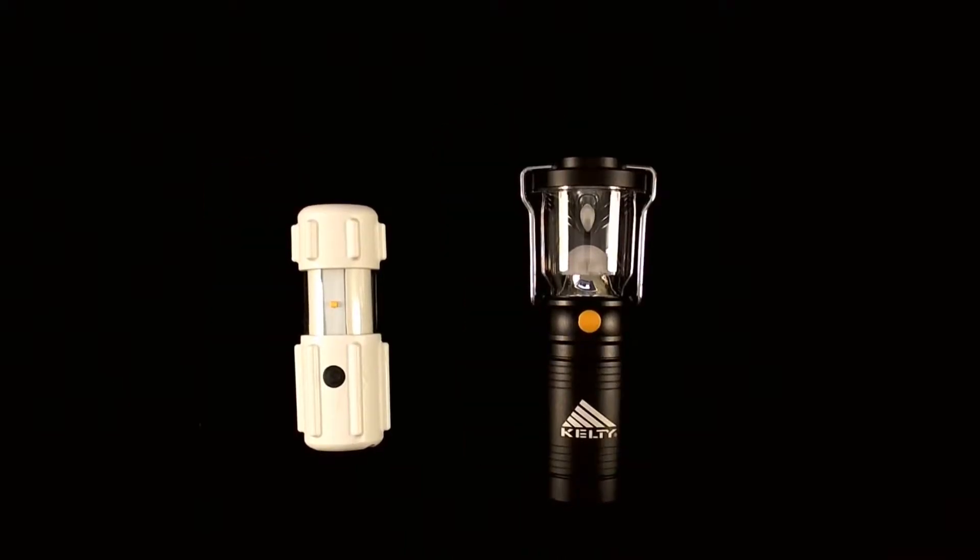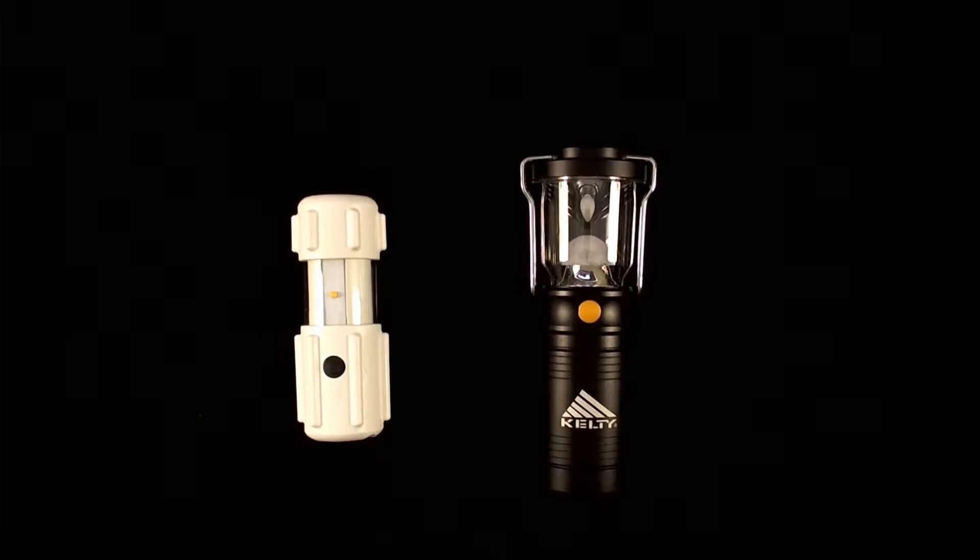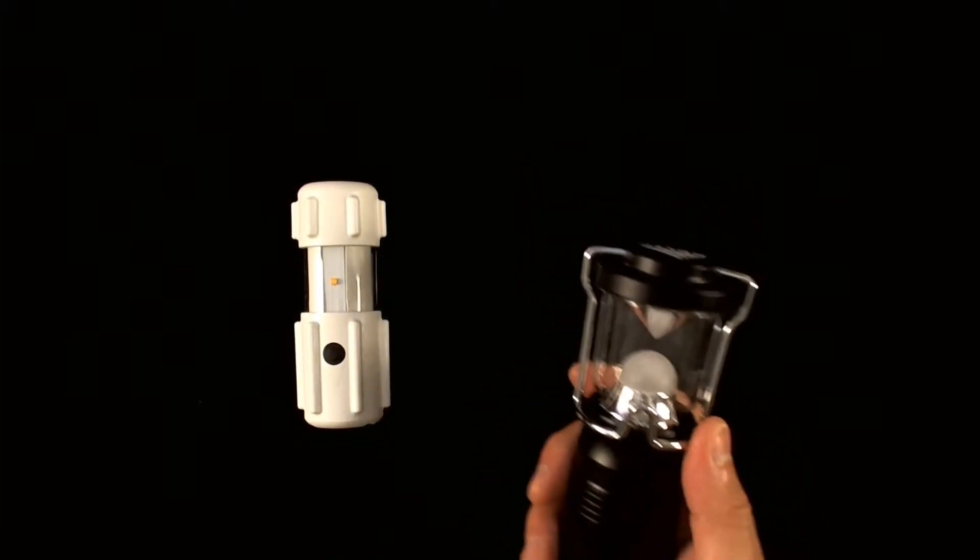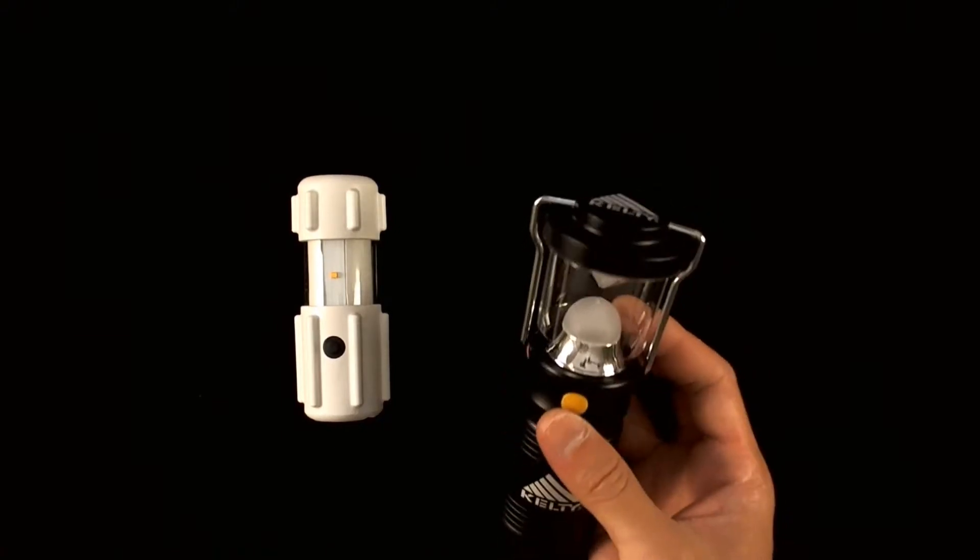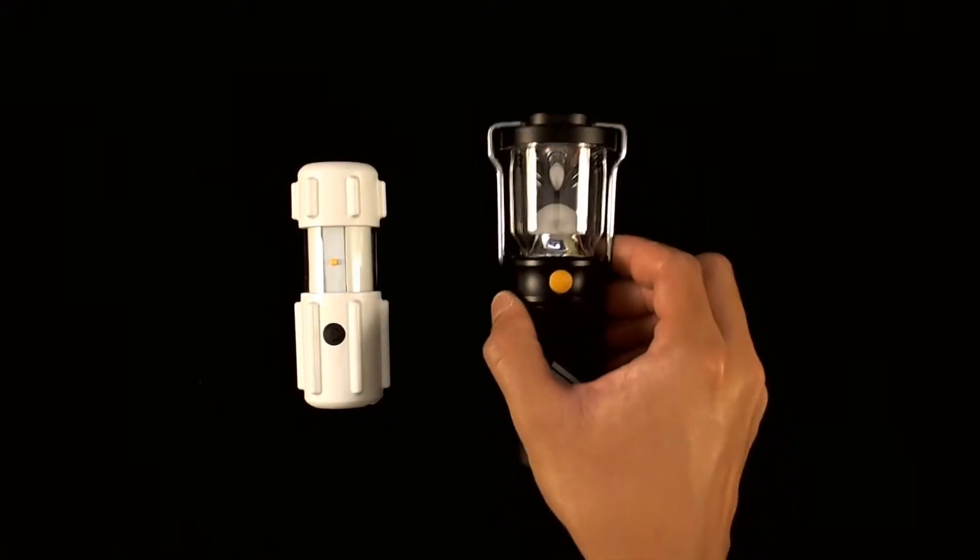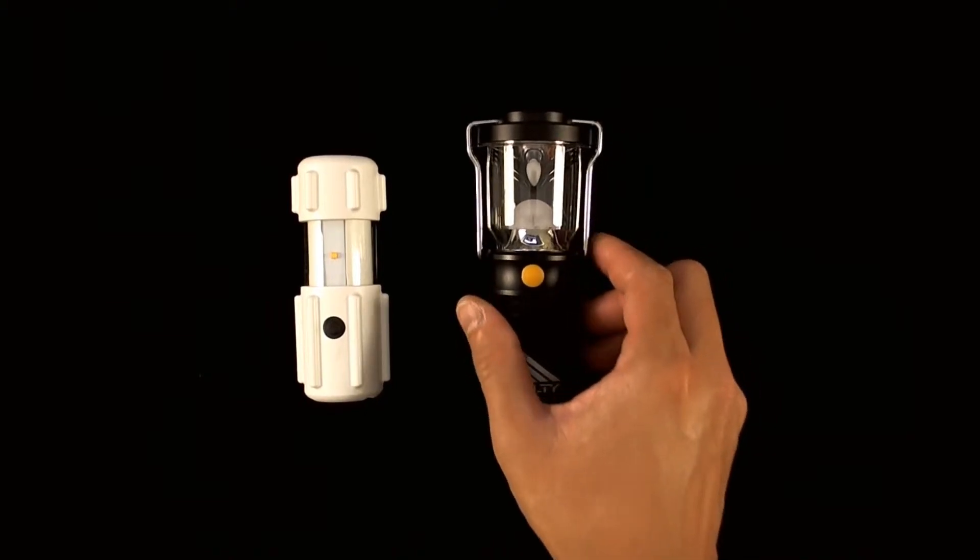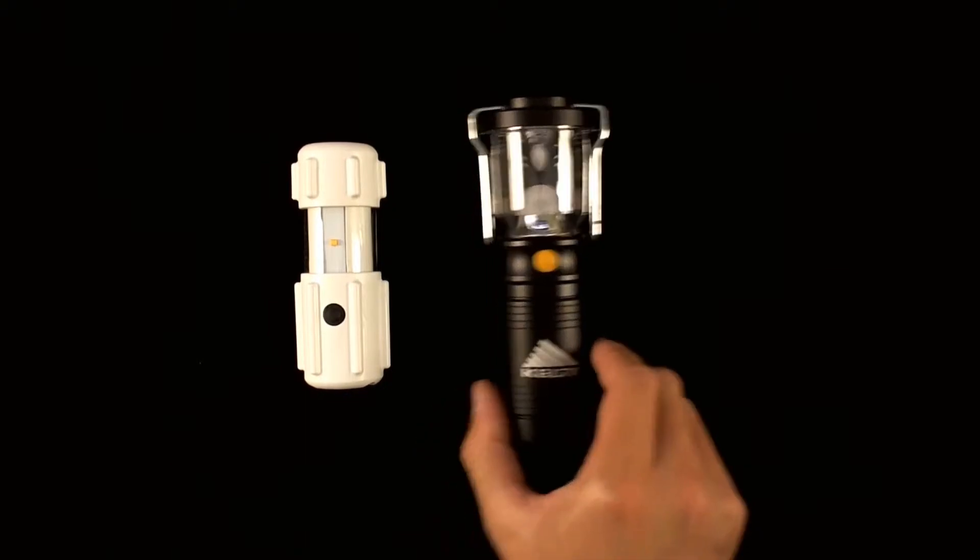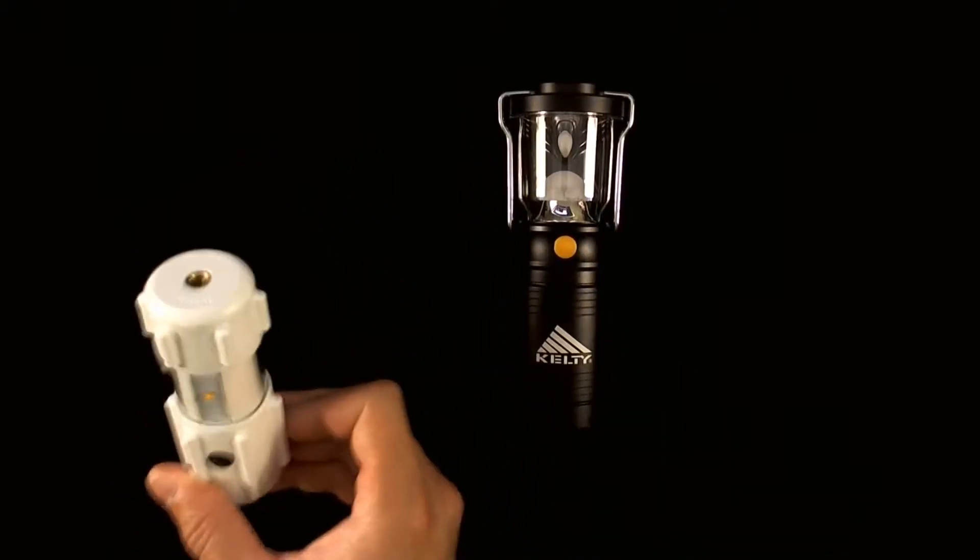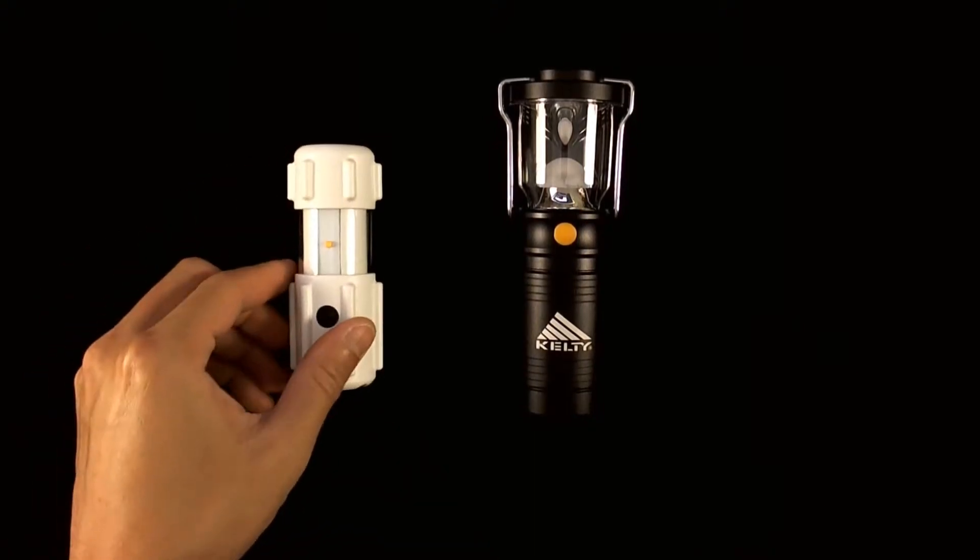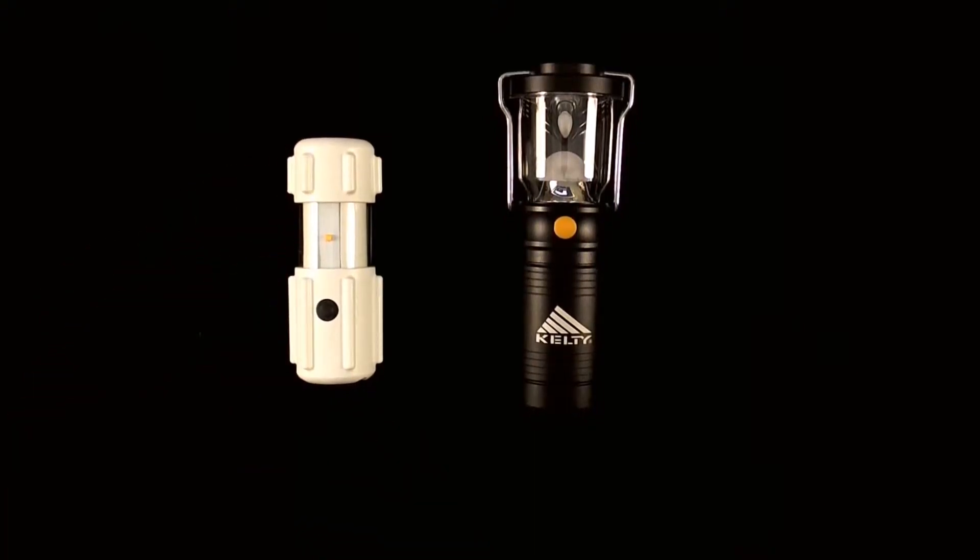With batteries the Kelty Lumatech Lantern comes in at a hefty 5.6 ounces. The Kelty is also made out of anodized aluminum which is a first amongst the lanterns that we've taken a look at. Almost every other lantern we've done a comparison video of has been made of plastic or some sort of over mold. The RPAL on the other hand is also a plastic constructed device and comes in at 4.7 ounces with battery.